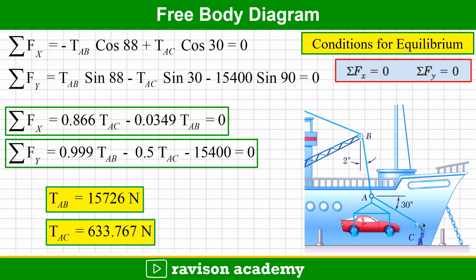The two equations are: 0.866·T_AC − 0.0349·T_AB = 0, and 0.999·T_AB − 0.5·T_AC − 15400 = 0. Solving these simultaneously gives T_AB = 15,726 Newtons and T_AC = 633.767 Newtons.